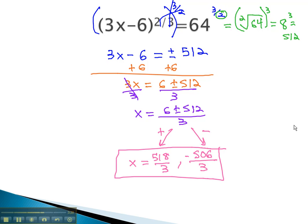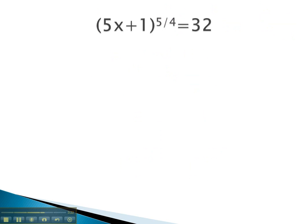Let's try another example. In this problem, we need to clear the exponent of 5 fourths. We will do it with a 4 fifths or reciprocal exponent. The 4s and 5s will undo each other, leaving us with 5x plus 1 equals the 4 fifths power on 32.